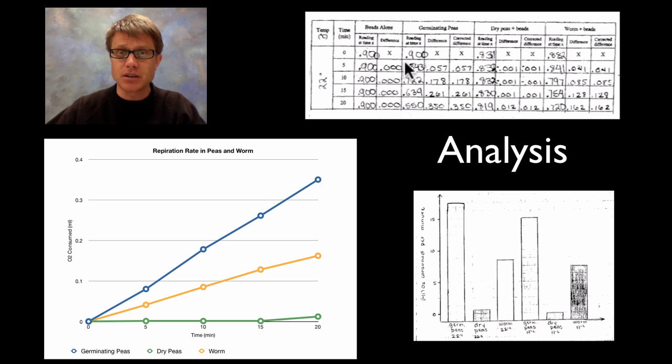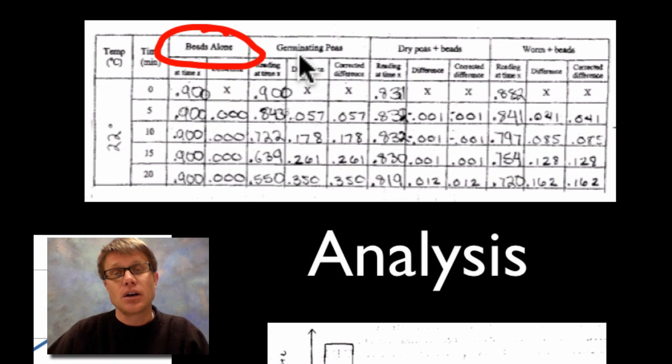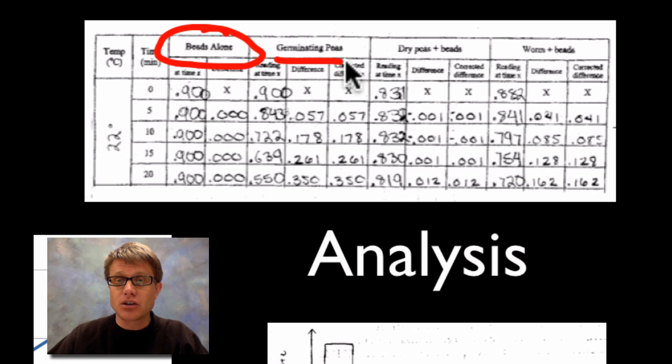What do we find? Well here's some data. So here would be the beads alone. Again we're using that to just accommodate for any changes because temperature fluctuations are going to have a huge influence on this. We now got our germinating peas, dry peas and then worms. And so we can subtract any changes inside the beads from these other ones to account for any changes in temperature.